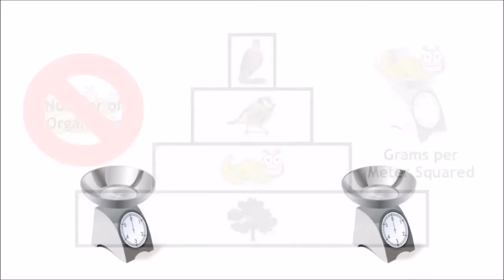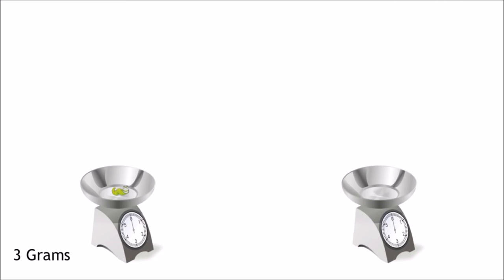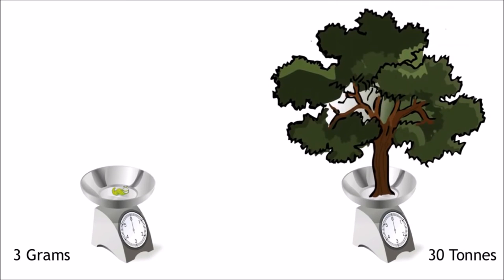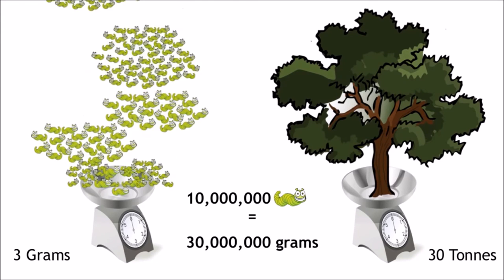Think about it this way. One caterpillar weighs about 3 grams. One oak tree weighs about 30 tonnes, which is 30 million grams. So that's 10 million caterpillars to equal the mass of one oak tree.